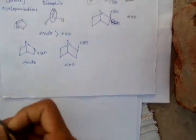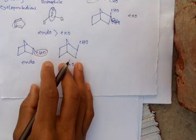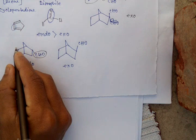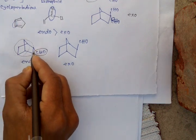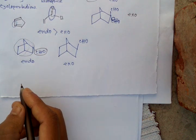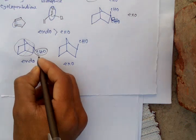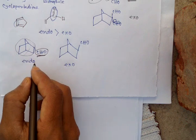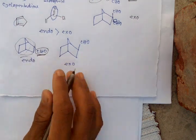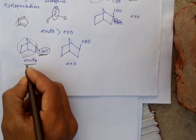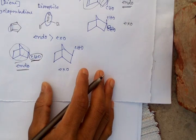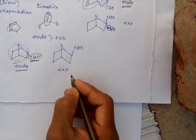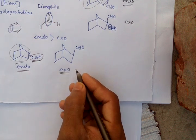Here this CHO aldehyde group is inside the planarity of this bicyclic system, of this whole bicyclic system. This CHO group inside the planarity of this bicyclic ring, so it is endo conformer. And here there is nothing like this, so this one exo conformer.